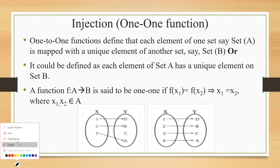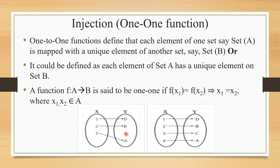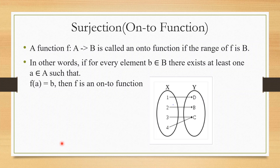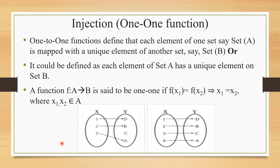In a one-to-one mapping, each element maps uniquely. For example, with four elements all mapped one-to-one, there is one balanced element remaining in set B. Each element's mapping is correct and unique — this is a valid one-to-one function.